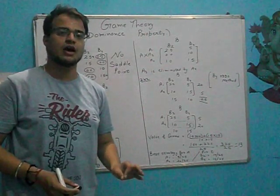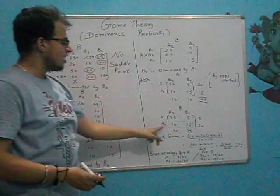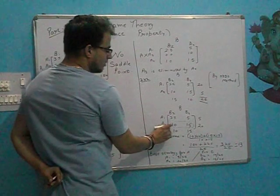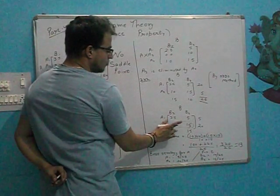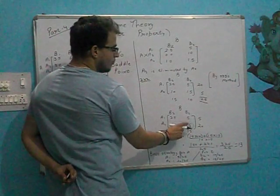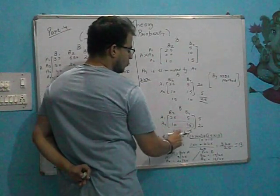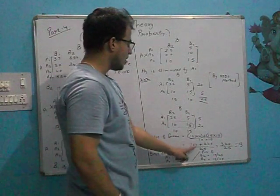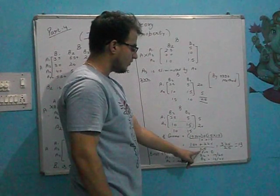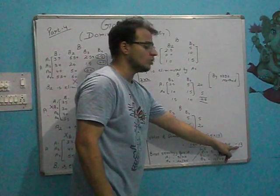Now we have to find out the value of game. A4 is 10, 10 multiplied by 10, plus B is 15, 15 multiplied by 15, divided by 10 plus 15 is 25. So 10 multiplied by 10 is 100, 15 multiplied by 15 is 225. 100 plus 225 equals 325 divided by 25. So answer is 30.